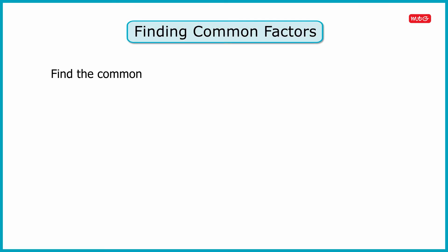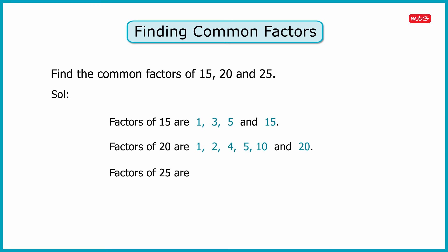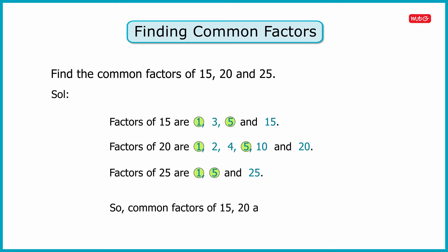Next, let us find out common factors of 15, 20, and 25. Factors of 15 are 1, 3, 5, and 15. Factors of 20 are 1, 2, 4, 5, 10, and 20. And factors of 25 are 1, 5, and 25. Here the factors that are common for the given three numbers are 1 and 5. So we can say that the common factors of 15, 20, and 25 are 1 and 5.